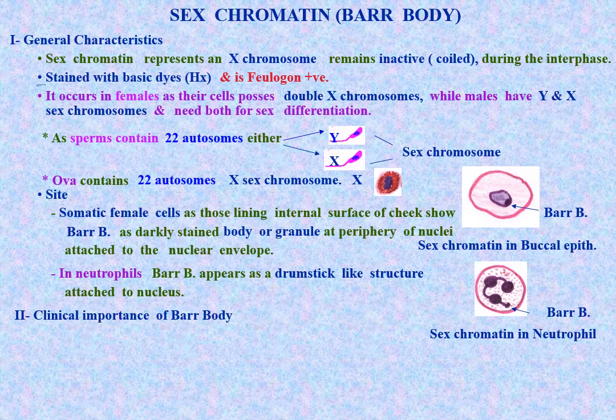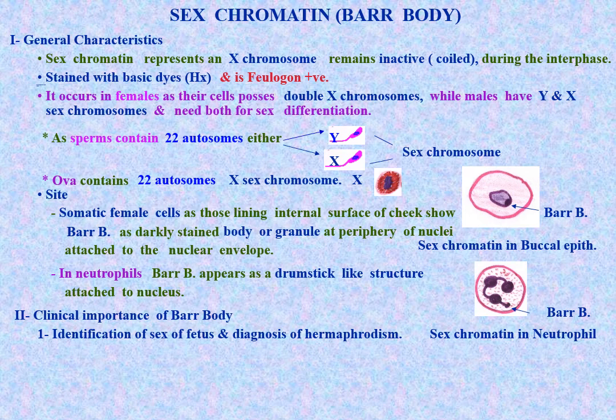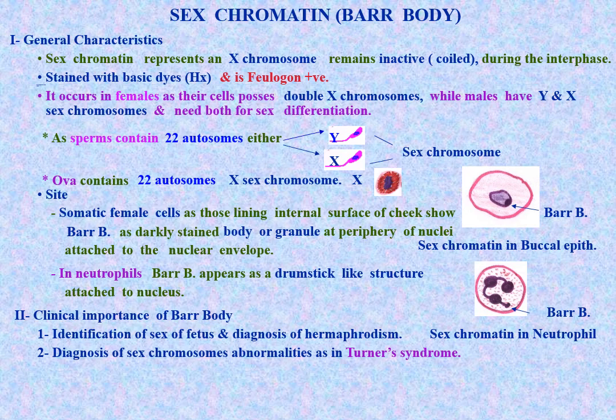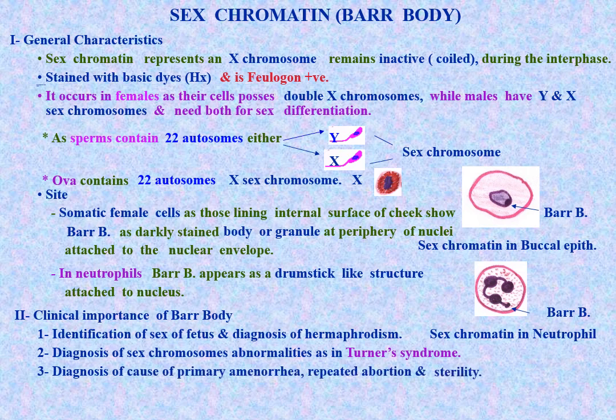In neutrophils, the Barr body appears as a drumstick-like structure attached to the nucleus. Clinical importance of Barr body: it is used for identification of the sex of the fetus, diagnosis of hermaphrodism, diagnosis of sex chromosome abnormalities as in Turner syndrome, and diagnosis of causes of primary amenorrhea, repeated abortion, and sterility.